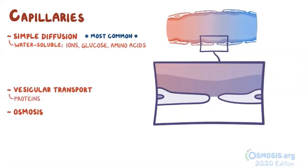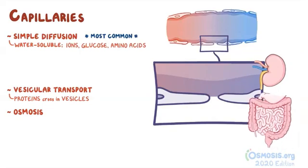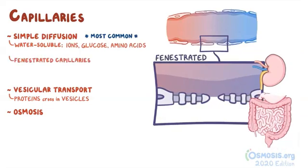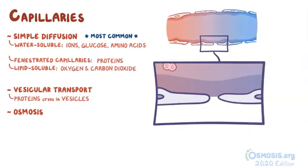But there are others, like proteins, that are too big to fit through these clefts, so they have to cross in little membrane bubbles called vesicles. The exceptions are the capillary walls in the kidney and intestines, which are fenestrated, meaning they have large pores that allow some proteins to cross unimpeded. Alternatively, lipid-soluble solutes and gases like oxygen and carbon dioxide can just diffuse across the capillary walls.